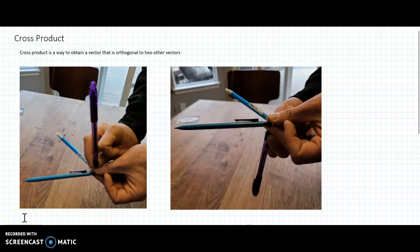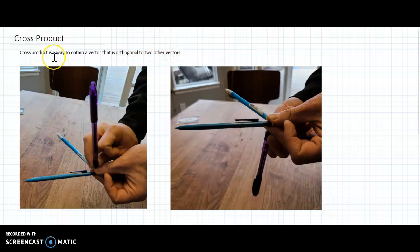This is going to be the first in what will probably be a couple videos about the cross-product. I'm going to tell you what it is or what it does, and then we'll get to a point where we can take some cross-products and make some other observations. The cross-product is a way to take two vectors and find one that is orthogonal to both of them.